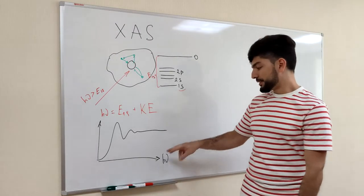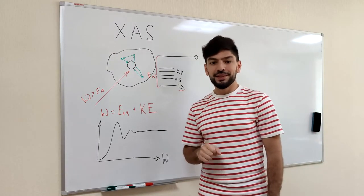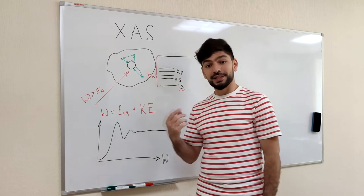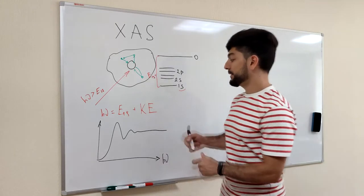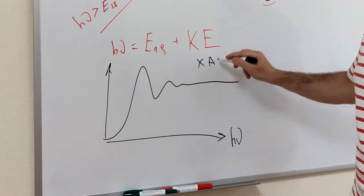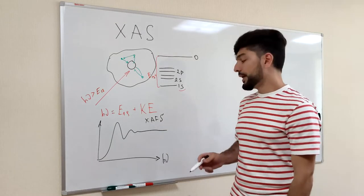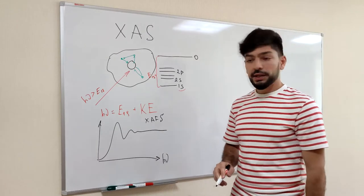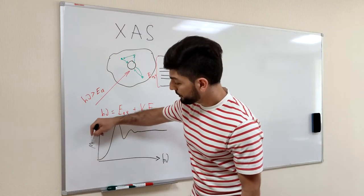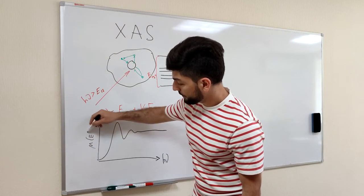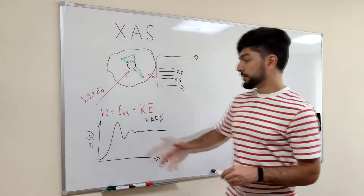If we tune this energy really fine, the spectrum is called X-ray absorption fine structure, or XAFS. The ordinate axis in this plot is the absorption coefficient, which depends on energy.